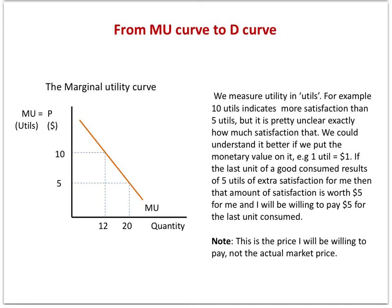But exactly how much satisfaction is 10 utils is hard to tell. It becomes more clear when we start measuring extra satisfaction in dollars rather than utils. Suppose I consume the 12th unit of a good and I got so much additional satisfaction from it that I will be willing to pay 10 dollars to get it.